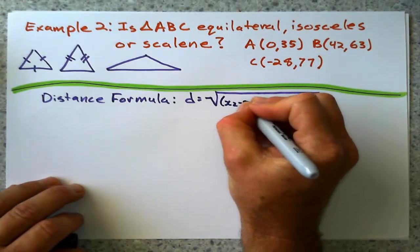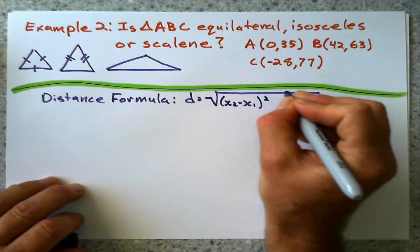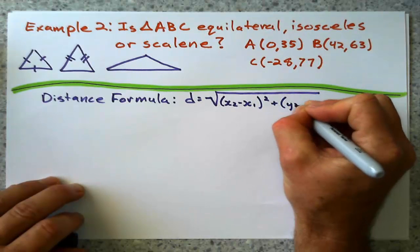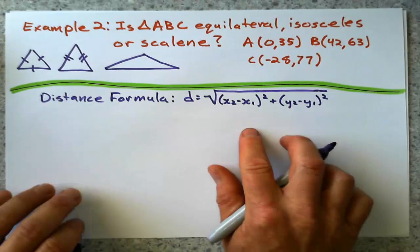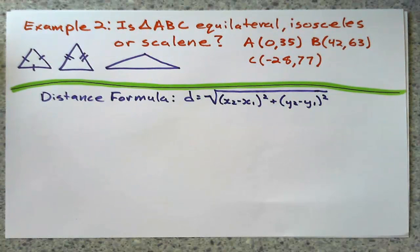Change in x squared plus change in y squared. All under the square root symbol. Derives from Pythagoras, of course. And so we're going to find the three side lengths and see what they are.